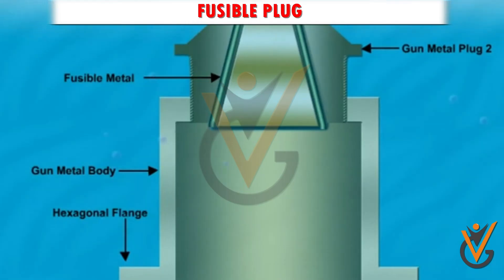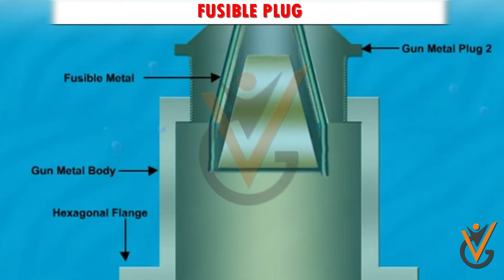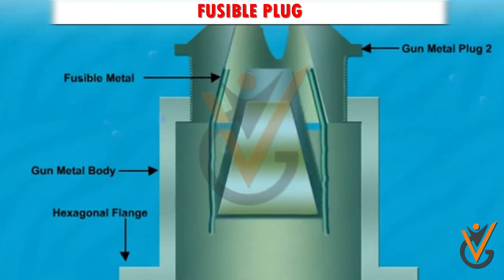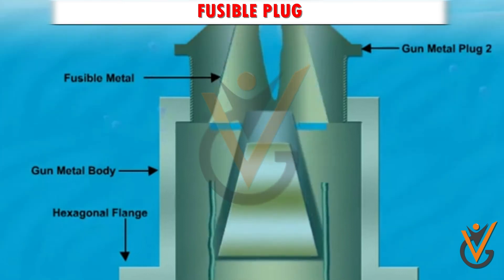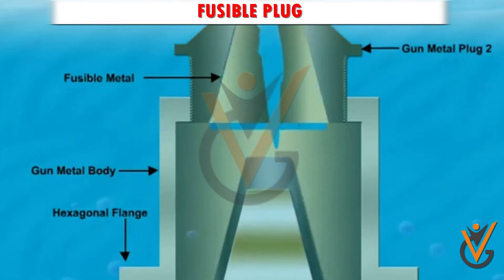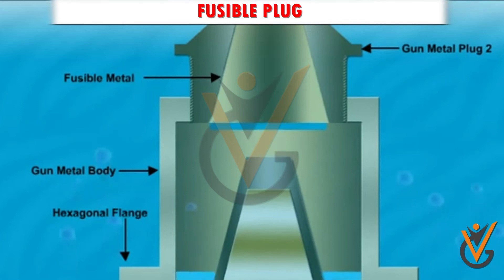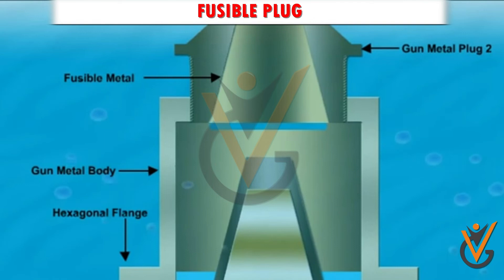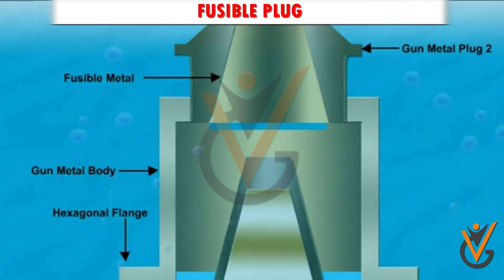Fusible plug: when the air temperature from the compressor is high, above 105 degrees Celsius, pressure is released by melting or fusing the metal. It cannot be used again after activation as it is permanently damaged, and it releases all contents or pressure to empty.